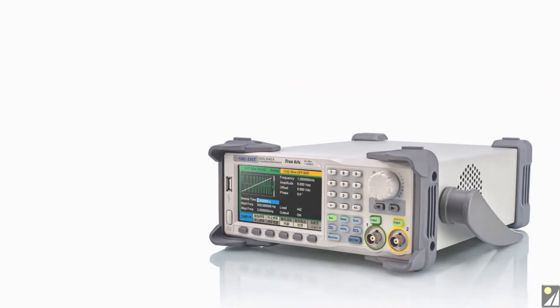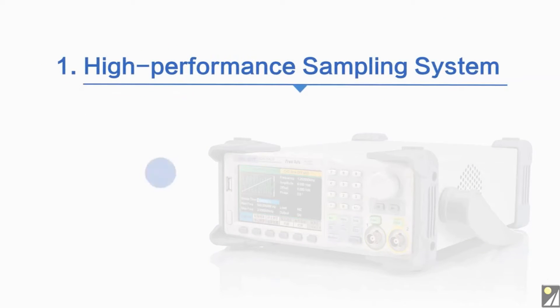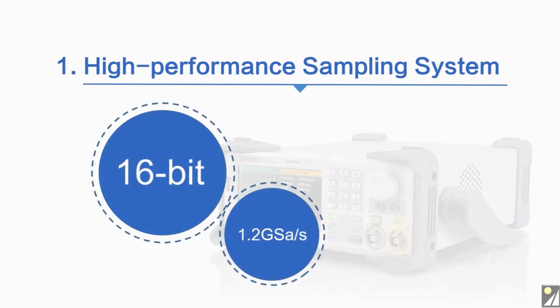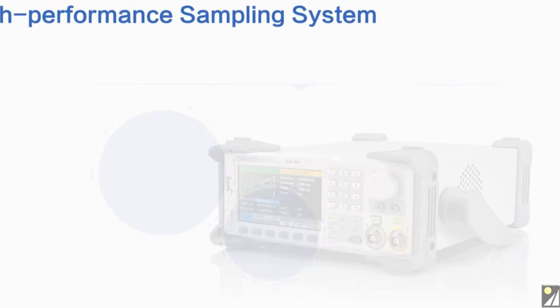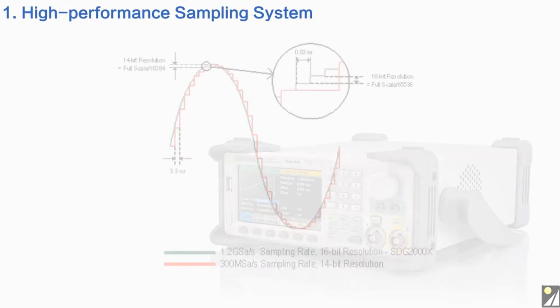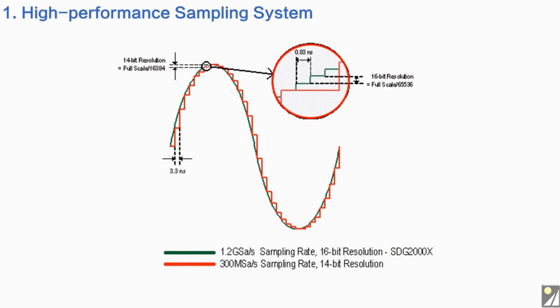The SDG2000X has a high performance sampling system with 1.2 giga sample per second sampling rate and 16-bit vertical resolution, which results in more accurate reconstructed waveforms and lower distortion.